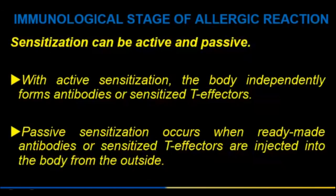The immunological stage of allergic reaction — sensitization — can be active and passive. With active sensitization, the body independently forms antibodies or sensitized T-effectors; in passive sensitization, sensitized T-effectors are injected into the body from outside.